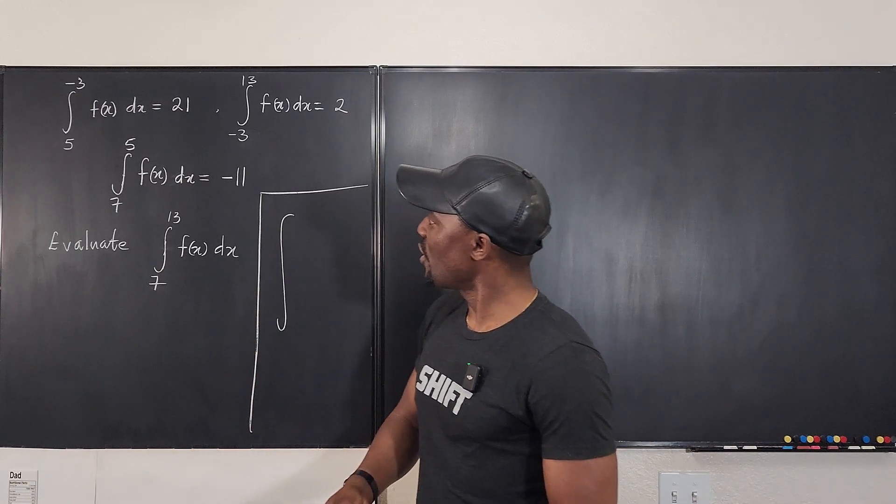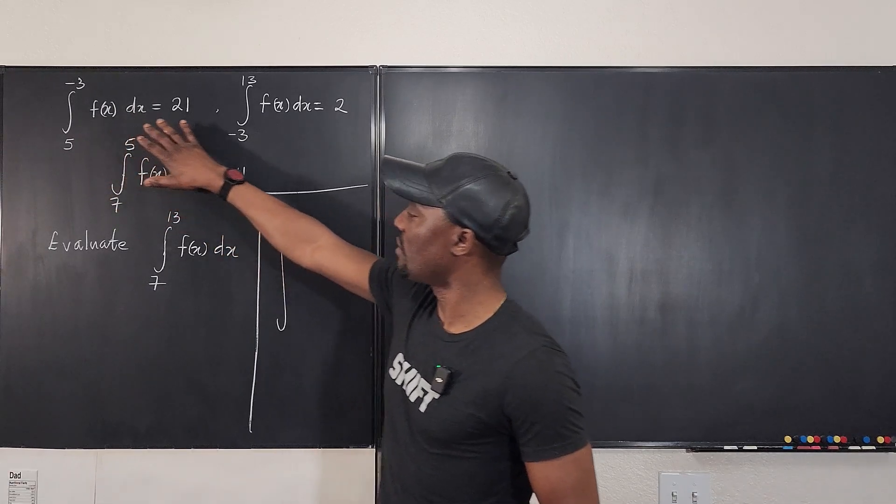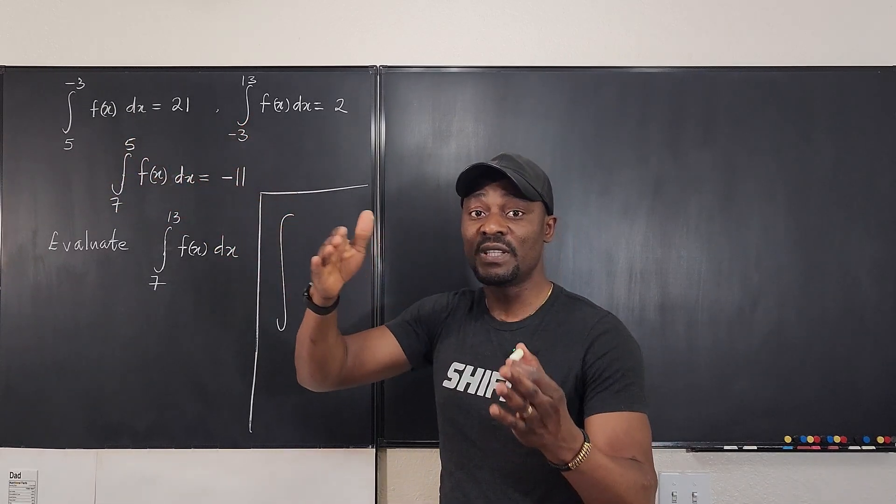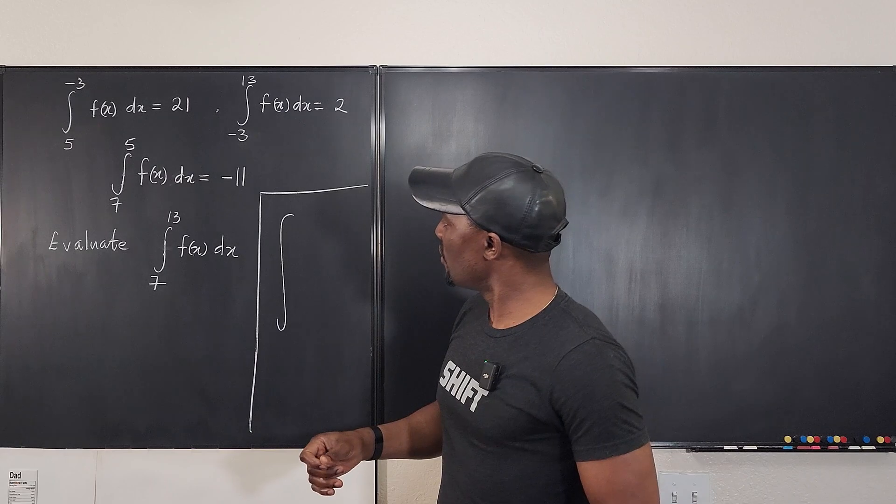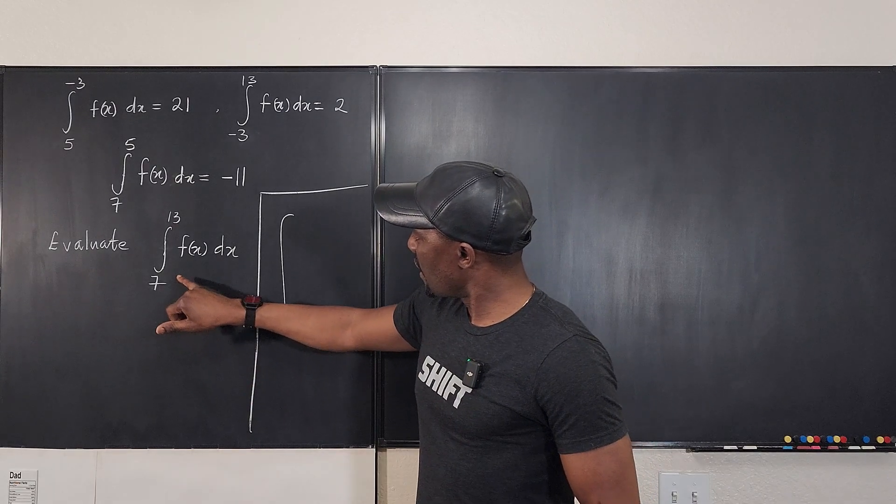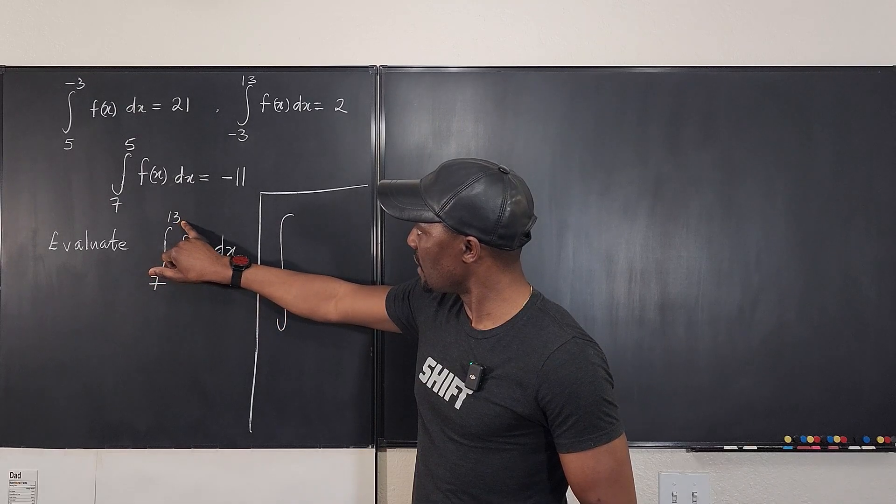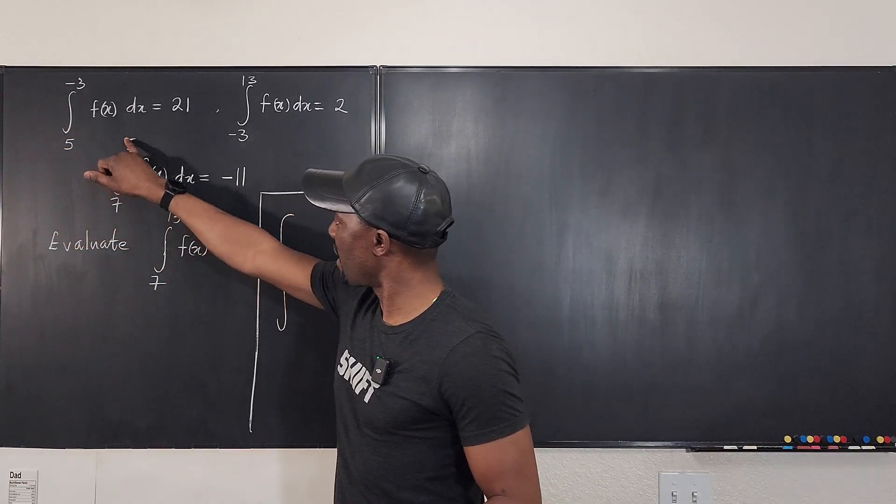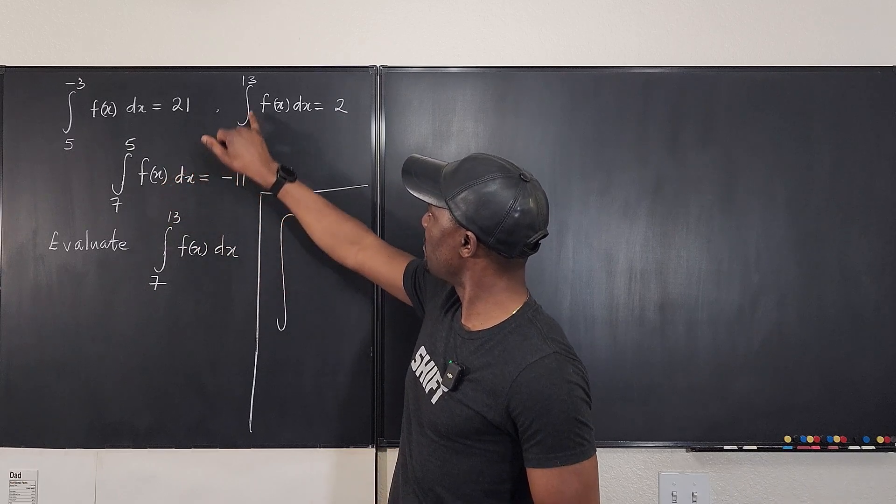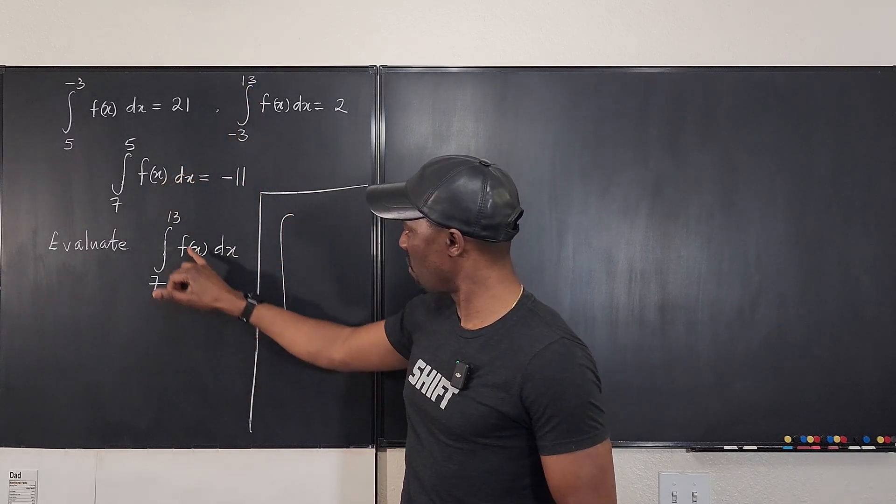So here you're given the same function. They give you the different integral values within different boundaries, but you're looking for the value of the integral from 7 to 13, but they gave you from negative 3 to 5, from 5 to 7, and from negative 3 to 13. But this is the one we want.